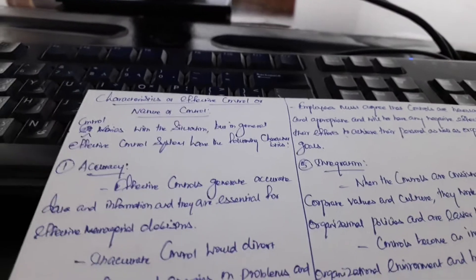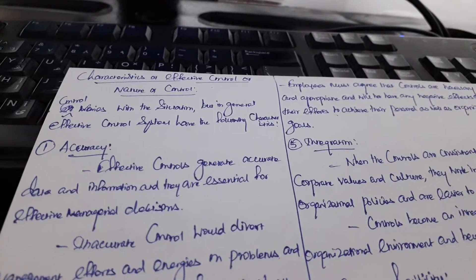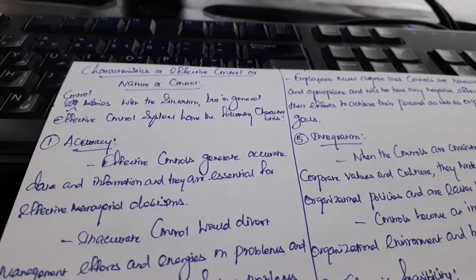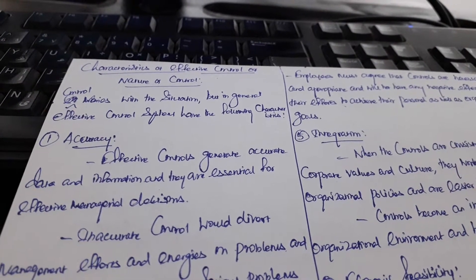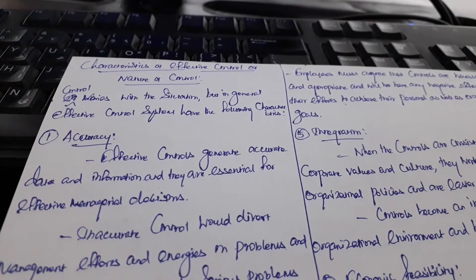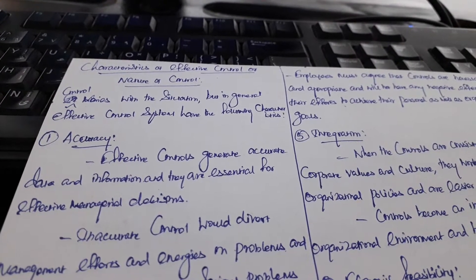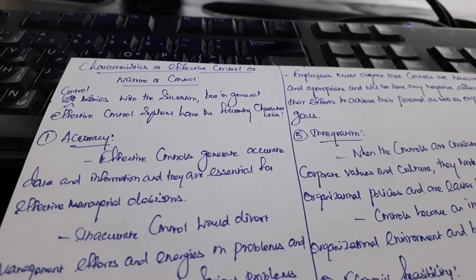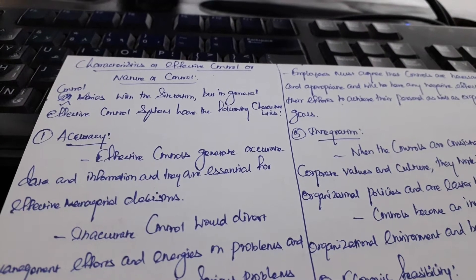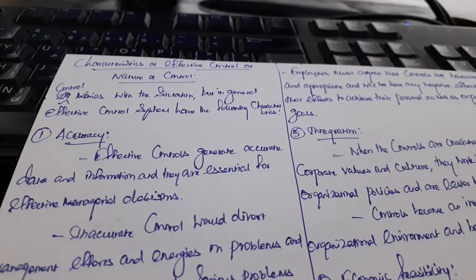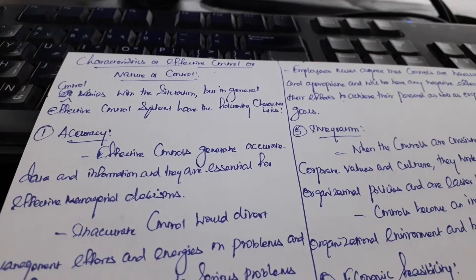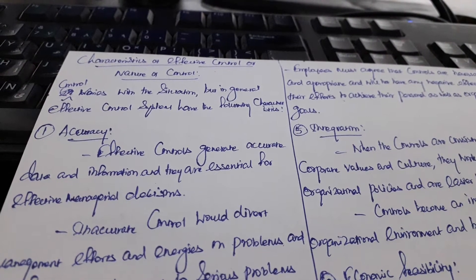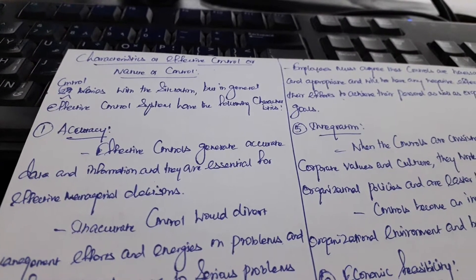First, accuracy. Effective controls generate accurate data and information. Accurate data and information are essential for effective managerial decisions. In this case, we will generate an effective control and have a good decision for management.